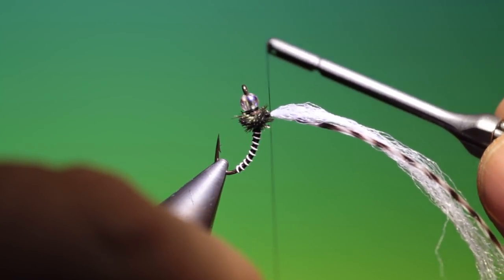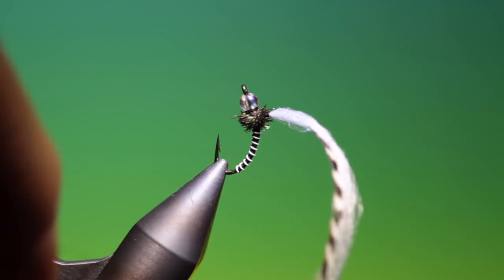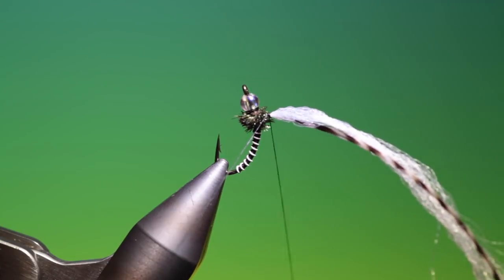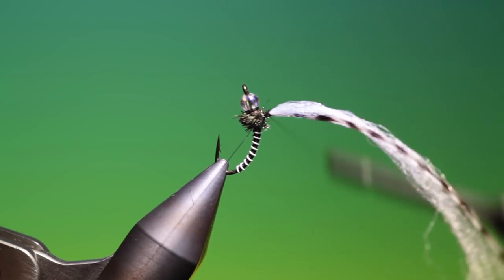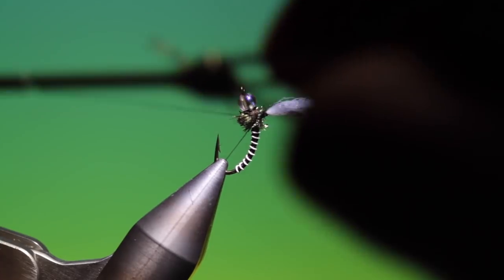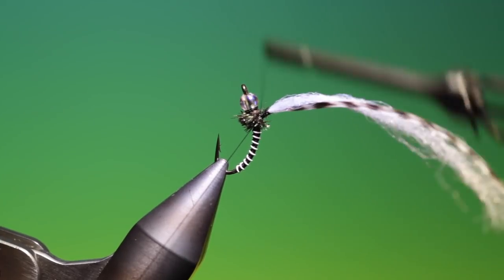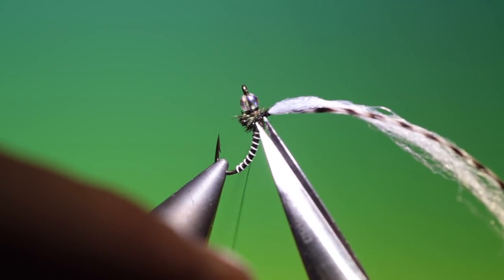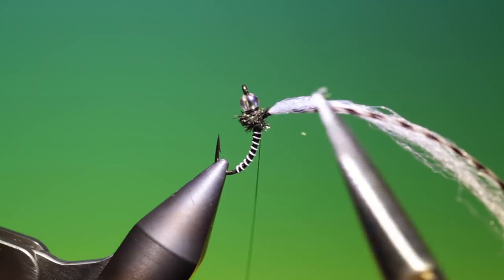Attach our tying thread again to the post and wind it down into the thorax. Good. Remove that.